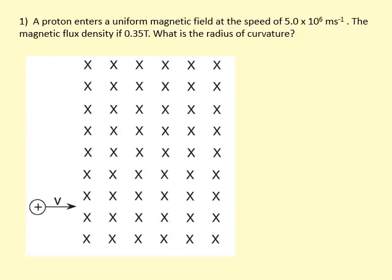In this question, a proton enters a uniform magnetic field at a speed of 5 times 10 to the 6 meters per second. The magnetic flux density is 0.35 teslas. What is the radius of curvature? So obviously what's going to happen is we're going to start doing a circular motion like that. So what we're trying to find is the radius.